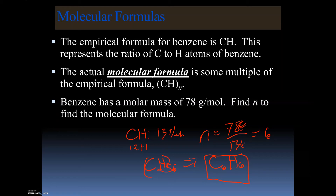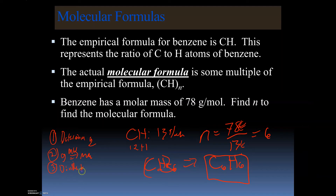To summarize the steps for determining an empirical formula: first, determine your grams; second, convert grams to moles by dividing by molar mass; third, divide by the smallest number to develop your ratio — this gives you a whole number; fourth, write the empirical formula.